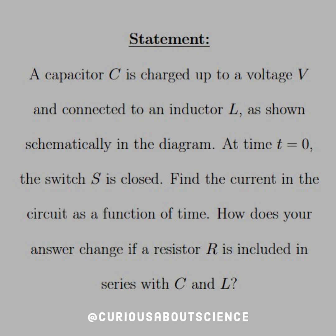So the statement reads, a capacitor C is charged up to a voltage V and connected to an inductor L as shown schematically in a diagram. At time equals zero, the switch S is closed. Find the current in the circuit as a function of time. How does your answer change if a resistor R is included in series with C, the capacitor, and L, the inductor?